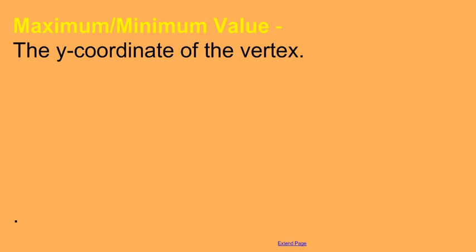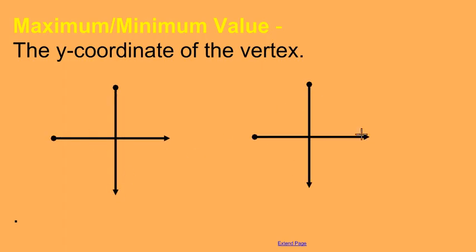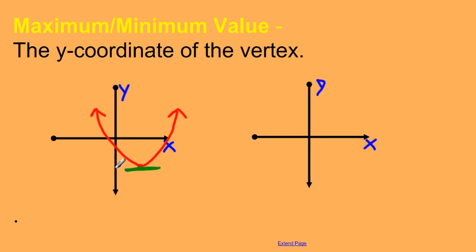The max or min value is just the y-coordinate of the vertex. If I have a parabola opening up, let's say the vertex is at y equals negative 3, it is going to have a minimum value at y equals negative 3. When a parabola opens up, it goes up forever, so there is a minimum value but no maximum.